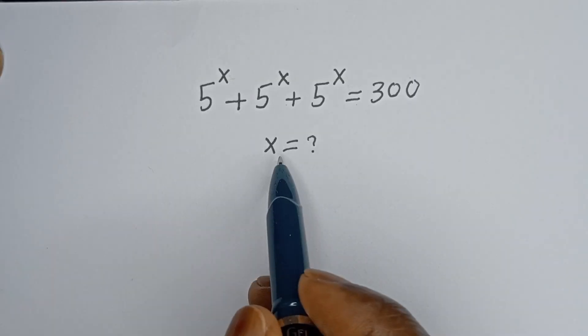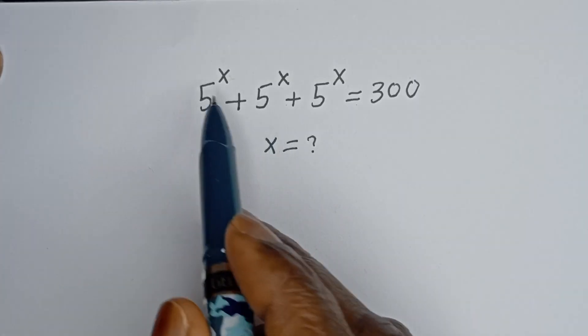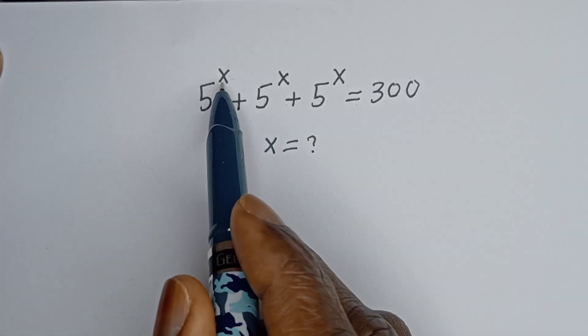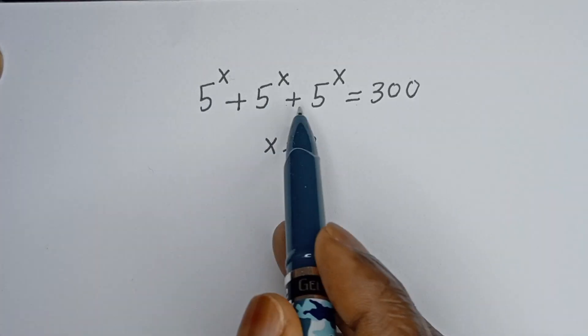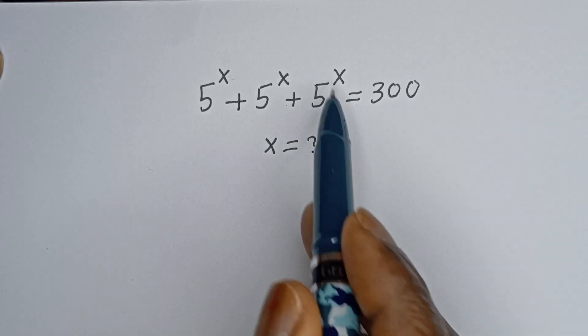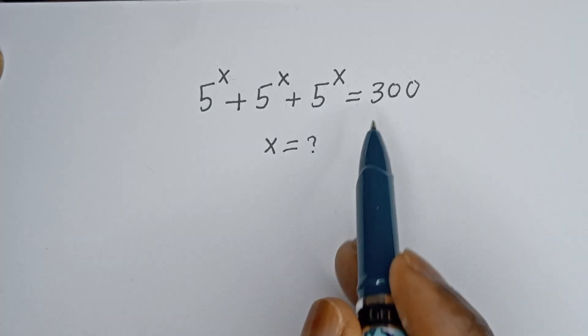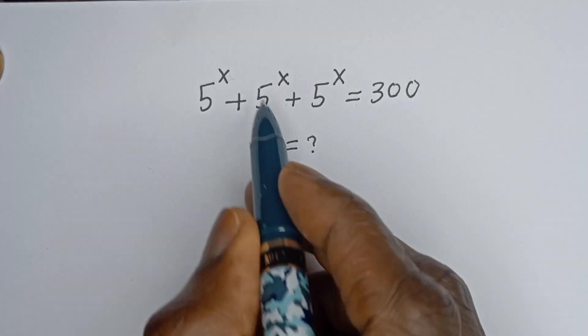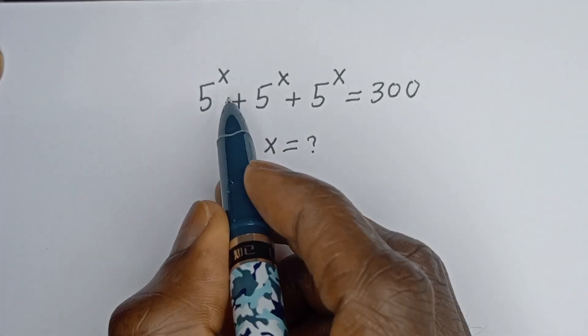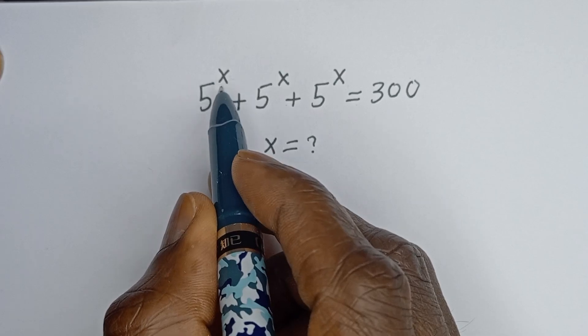Hello. How to solve for s in this equation: 5 to the power of s plus 5 to the power of s plus 5 to the power of s is equal to 300.